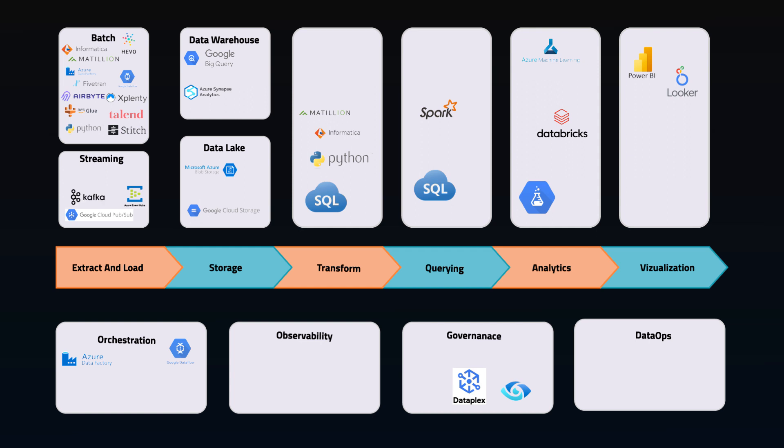For streaming data, we pretty much have Kafka and Spark Streaming. Our data warehouse options are generally tied to the big platforms, except of course Snowflake, and there's some new competition in this space that probably deserve a spot on this map soon. Data lakes are the big three platform storages. For transform-specific tools, DBT and Dataform are the top competitors here, but it's also very common to do it all using SQL stored procedures or Python scripts, depending on your storage type.